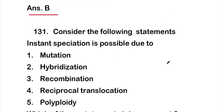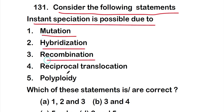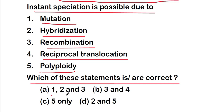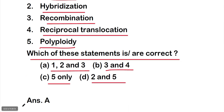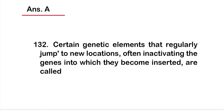Question 131: Consider the following — instant speciation is possible due to: (1) mutation, (2) hybridization, (3) recombination, (4) reciprocal translocation, (5) polyploidy. The right answer is option A — statements one, two, and three are correct. Instant speciation is possible due to mutation, hybridization, and recombination.